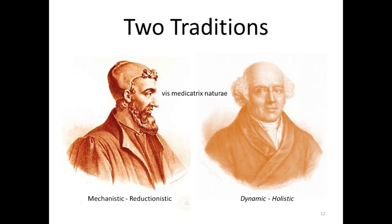So you basically have these two traditions: the empirical tradition and the rationalist tradition. On one side you have Galen, representing a more mechanistic, reductionistic tradition. On the other, you have Hahnemann, the fullest expression of the empirical tradition — a more dynamic or holistic approach. Between them is the Latin phrase vis medicatrix naturae — the healing power of nature — and these two different approaches look at the vis medicatrix naturae in a very different way, from completely different points of view.